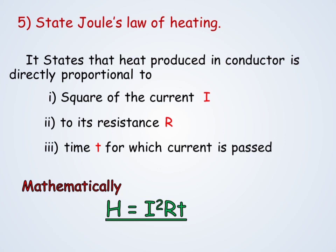State Joule's law of heating. It states that heat produced in a conductor is directly proportional to the square of the current, to its resistance, and to the time t for which the current is passed. Mathematically, heat produced in a conductor: H = I²RT.